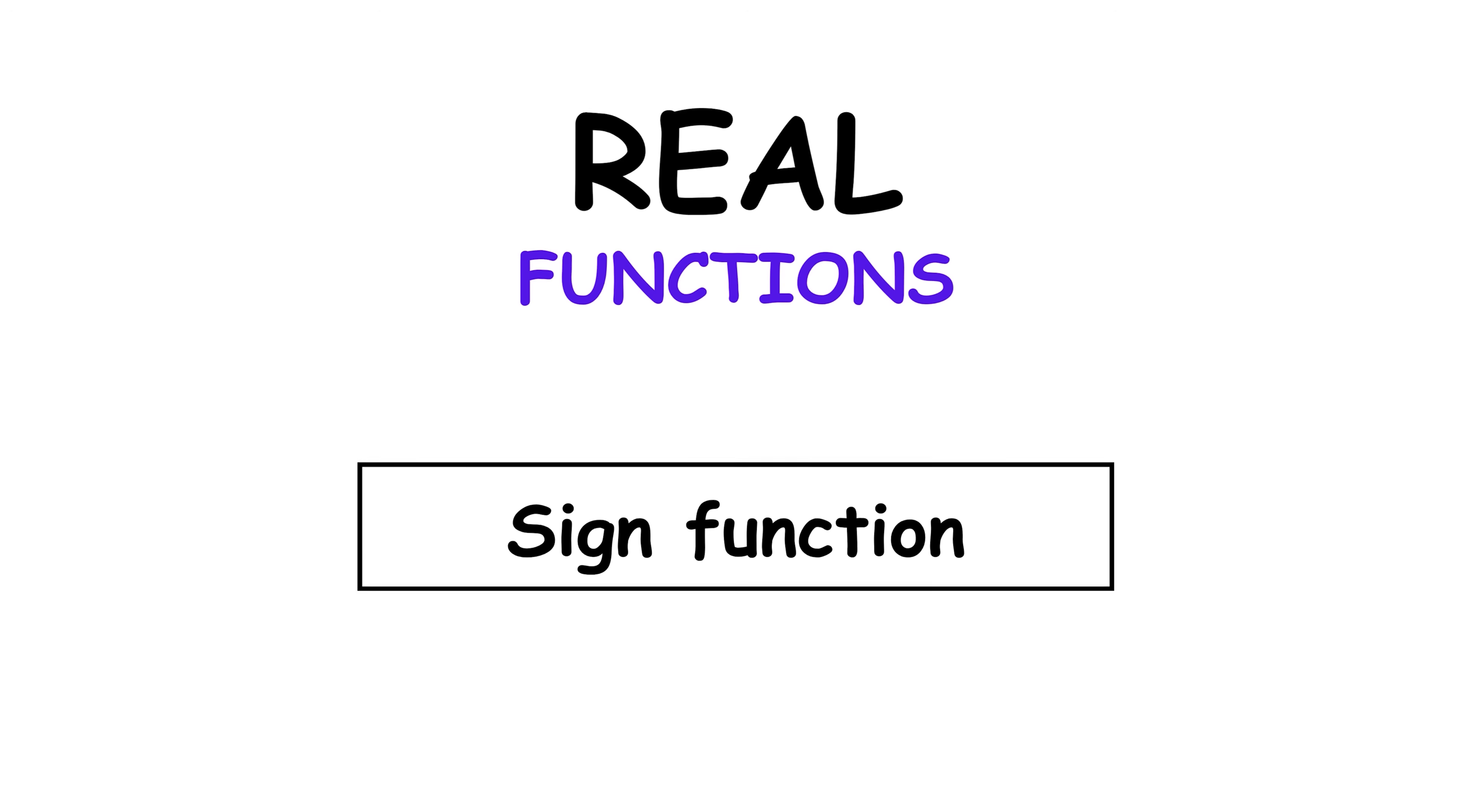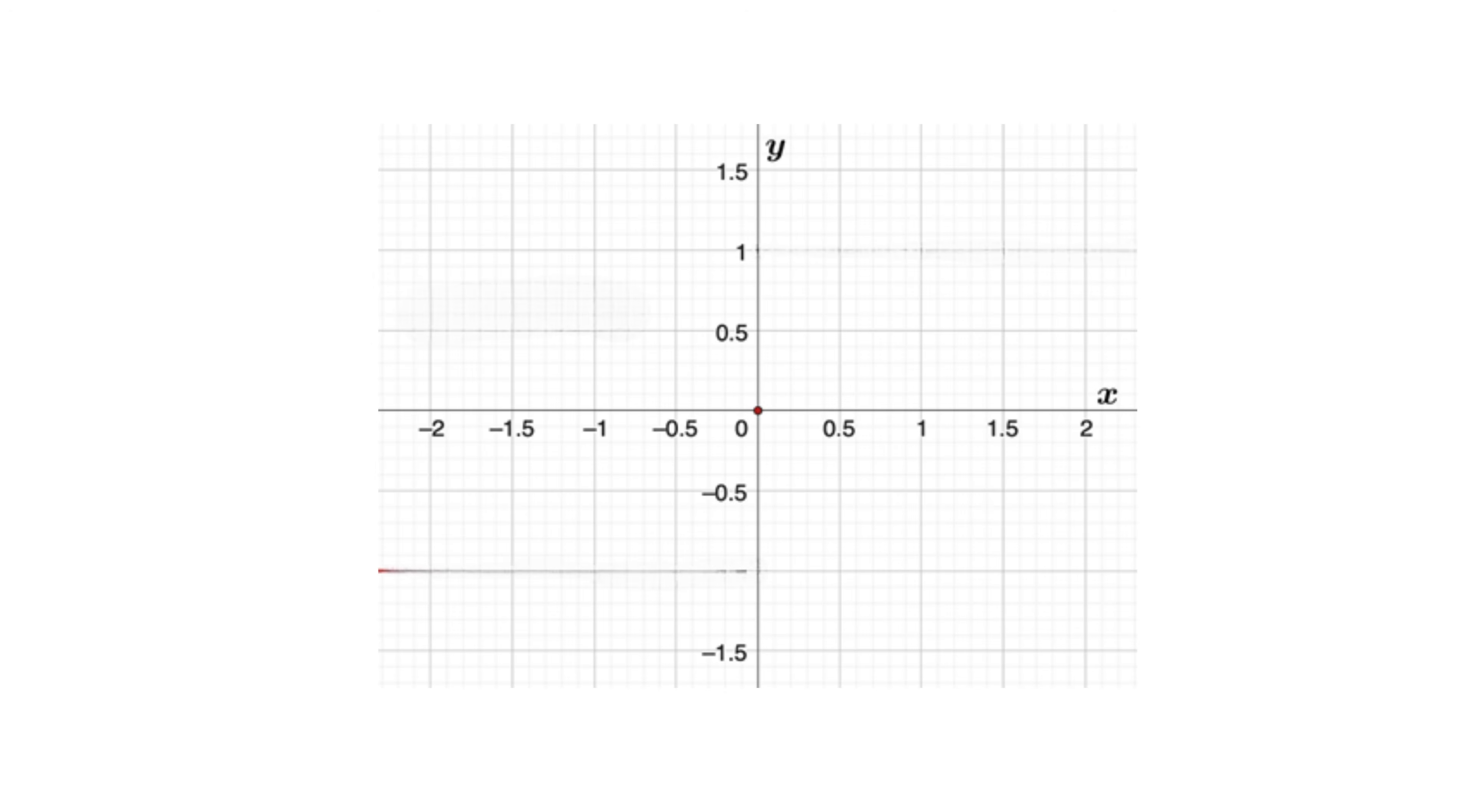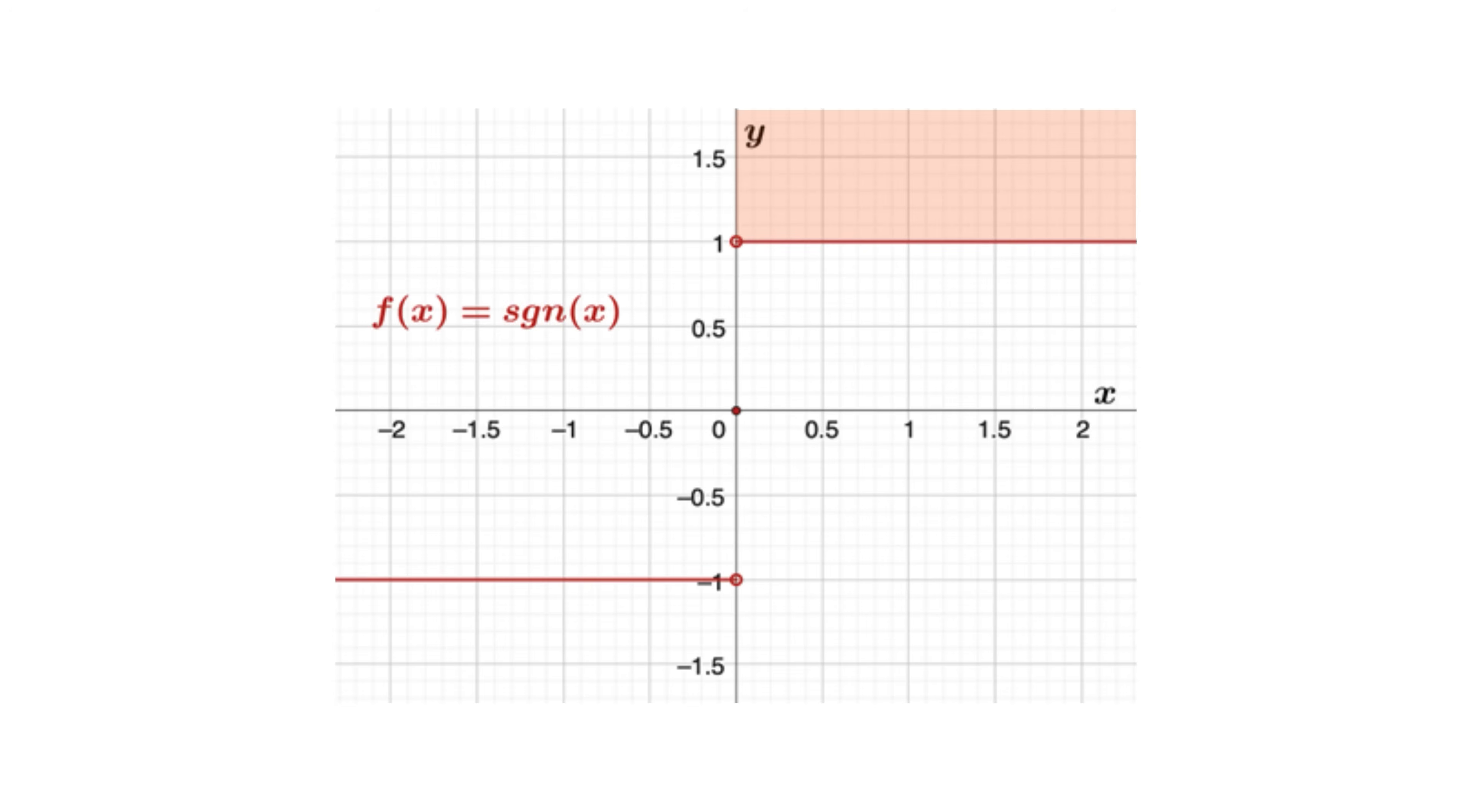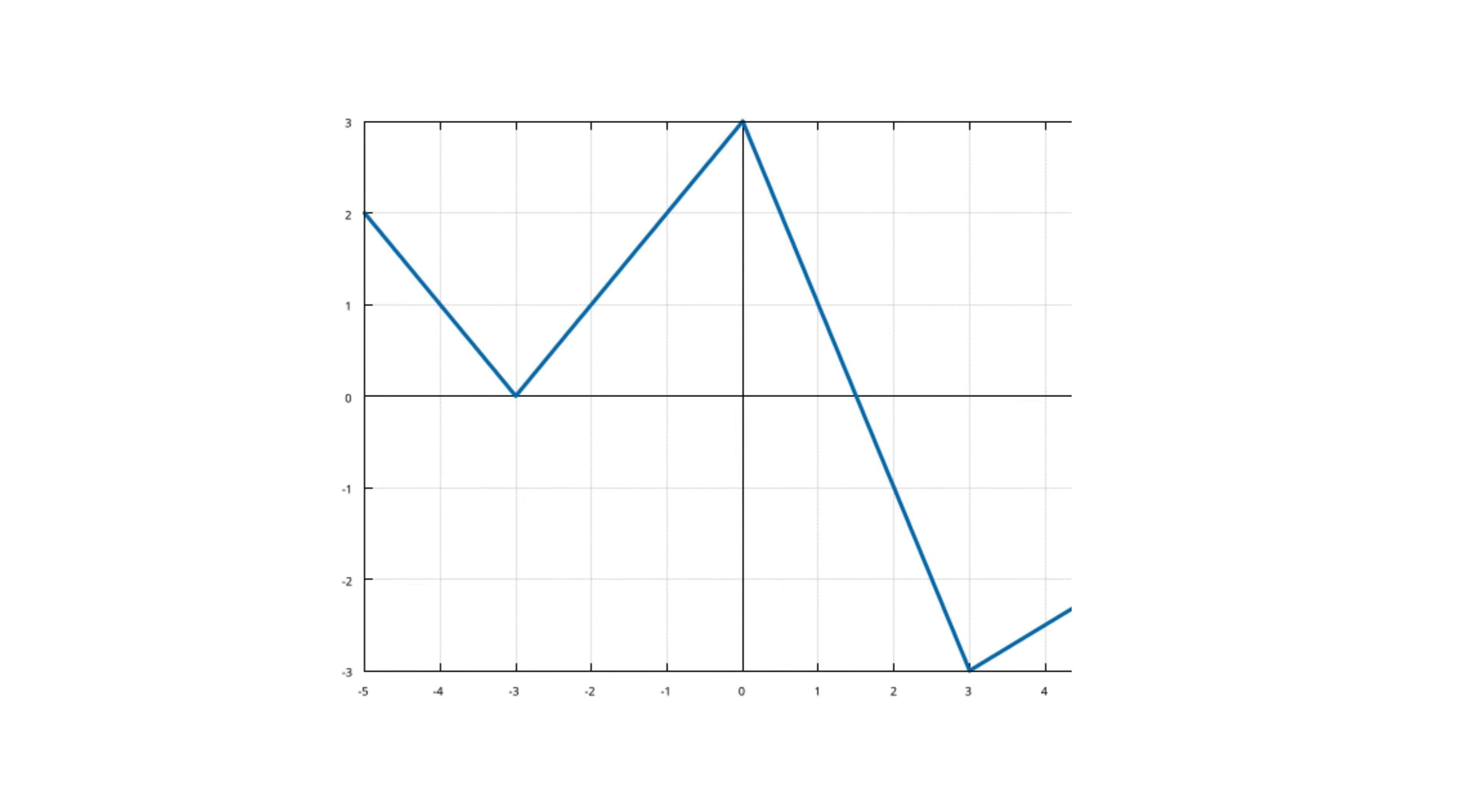Sign function. The sign function, sign of x, indicates whether a number is positive, negative, or zero. It is defined as negative 1 if x is less than 0, 0 if x equals 0, and 1 if x is greater than 0. Its graph has three levels. It is useful for representing direction, polarity, or for constructing piecewise defined functions.